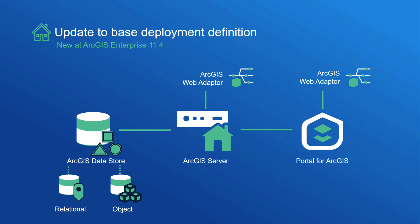Additionally, there is another option for customers deploying ArcGIS Enterprise in the AWS or Azure cloud to use a cloud storage service as their object store instead of using the ArcGIS DataStore configured for object. In ArcGIS Enterprise 11.4, a base deployment is now defined as Portal for ArcGIS, ArcGIS Server, ArcGIS WebAdapter, ArcGIS DataStore configured for relational, and for object store. This object store may be provided by the ArcGIS DataStore or, for cloud deployments, it may be provided by a cloud storage service.